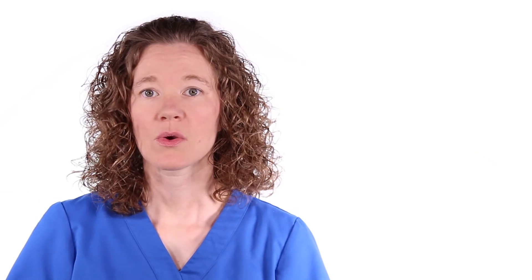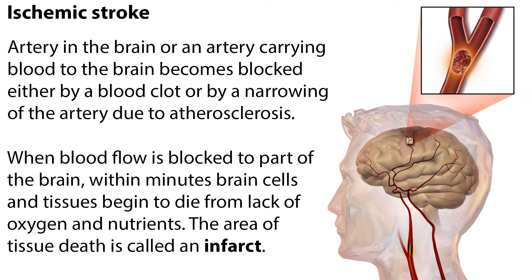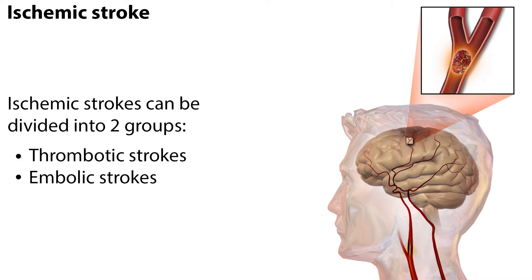First, we'll talk about the most common type, the ischemic stroke, which accounts for 87% of all strokes. They occur when an artery in the brain or an artery carrying blood to the brain becomes blocked, either by a blood clot or by a narrowing of the artery due to plaque buildup or atherosclerosis. When blood flow is blocked to part of the brain, within minutes brain cells and tissues begin to die from lack of oxygen and nutrients. The area of tissue death is called an infarct.